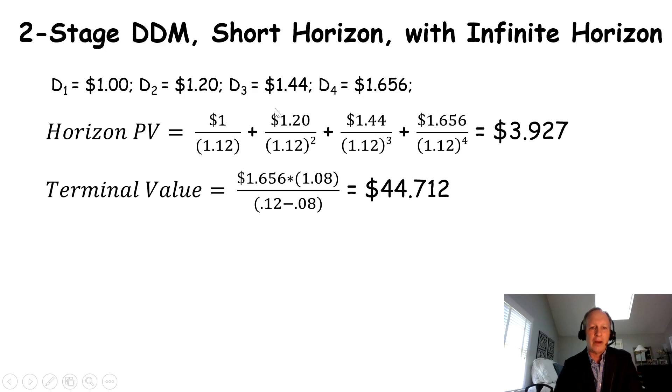Now, here's the thing. I get $1. I get $1.20. I get $1.44. The fourth year, I get $1.656. And if I want to, I can sell the stock at that point for $44.71. Four years from today, I can sell it. Now, the problem is, is that is four years from today. So I need to make that a present value. What's the present value of $44.71? What's that worth to me today?